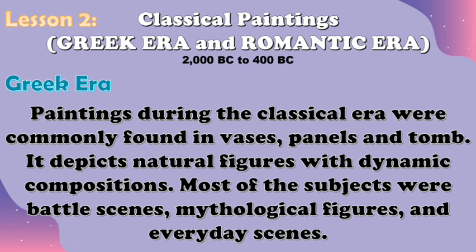Let's proceed to Lesson 2, which covers paintings from the Greek and Romantic era. In the Greek period, paintings were commonly found in vases, panels, and tombs. They depict natural figures with dynamic compositions. Most of the subjects were battle scenes, mythological figures, and everyday scenes. It reveals a grasp of linear perspective and naturalist representation.